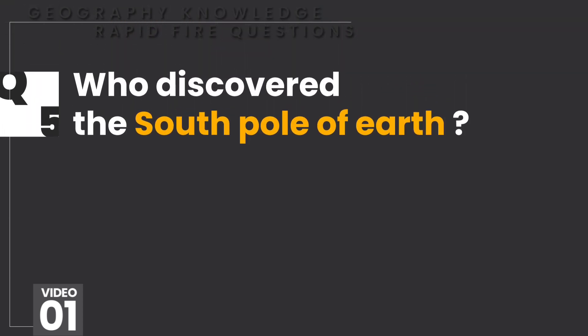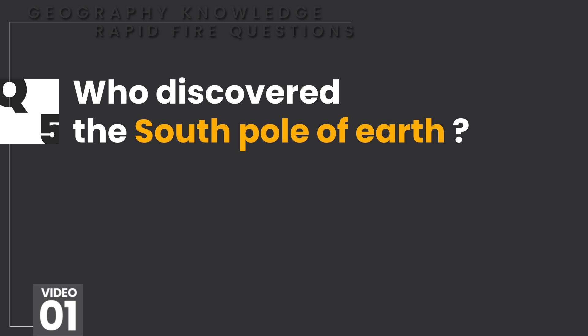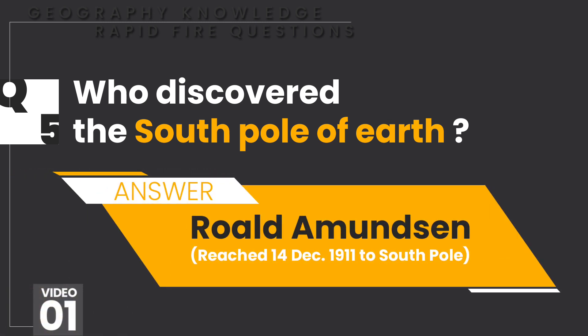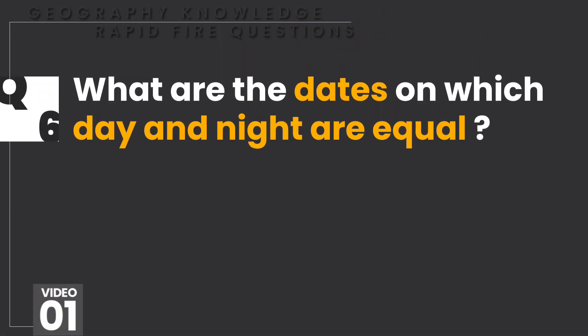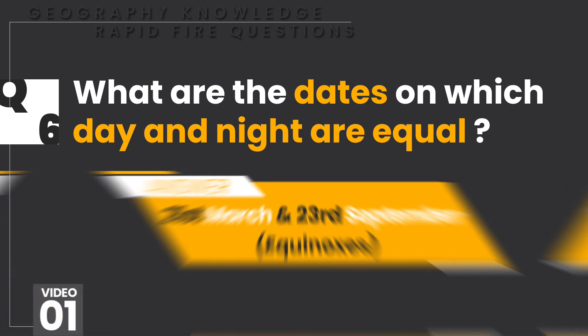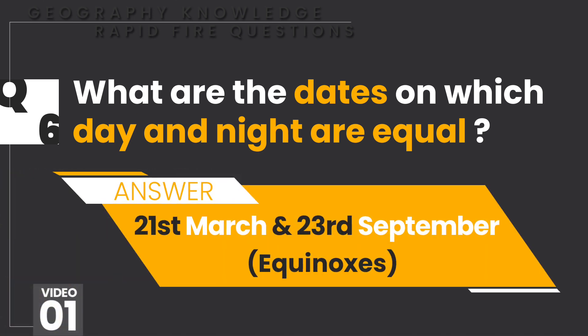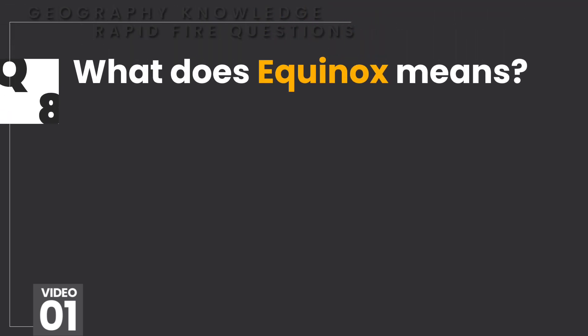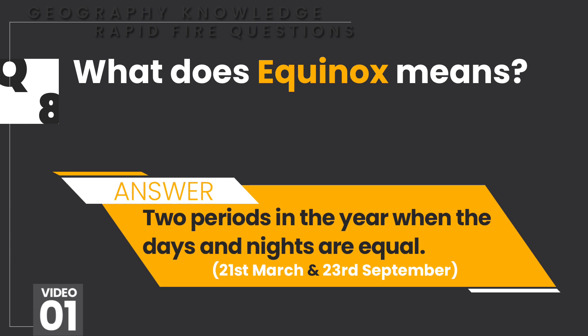Who discovered the south pole of earth? Roald Amundsen. What are the dates on which day and night are equal? 21st March and 23rd September. What does equinox mean?